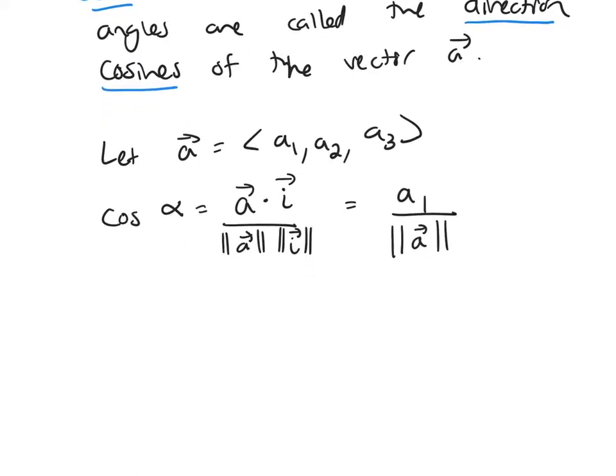And you can do something similar for the angle beta. The only difference is you'll use the vector j instead. And then for gamma, you would use the vector k. So similarly, cosine of beta would be A2 over the magnitude of the vector A.